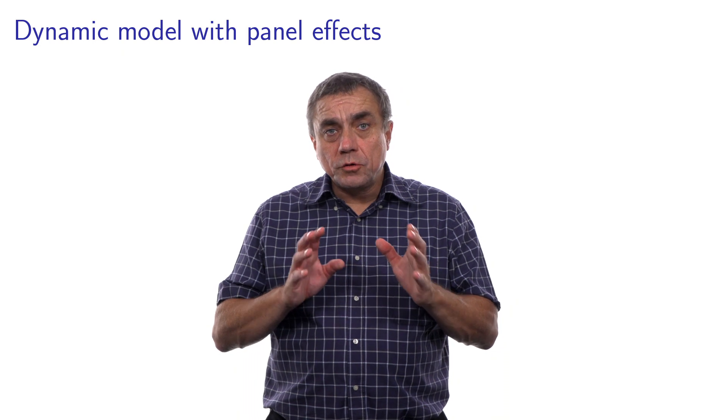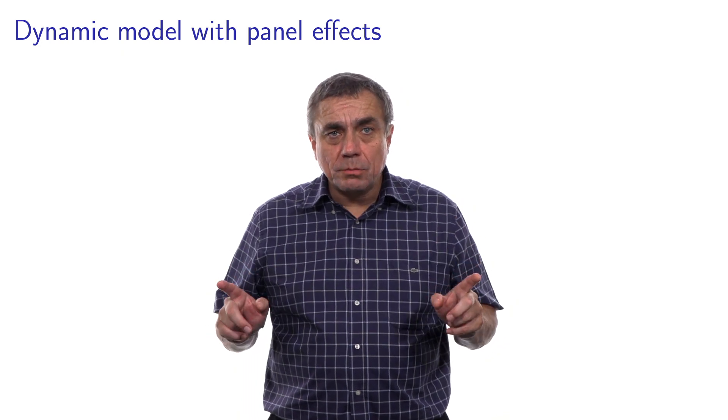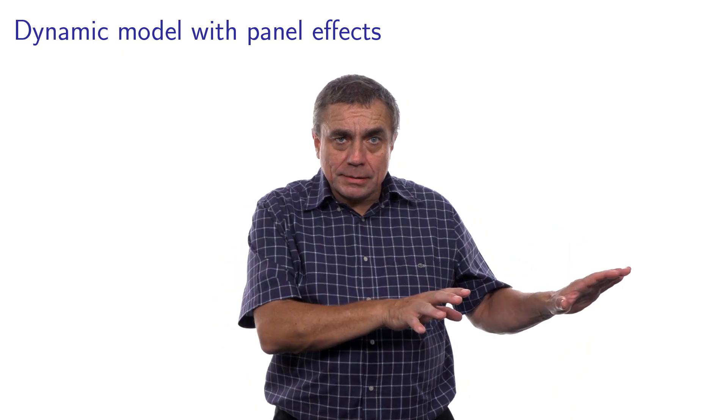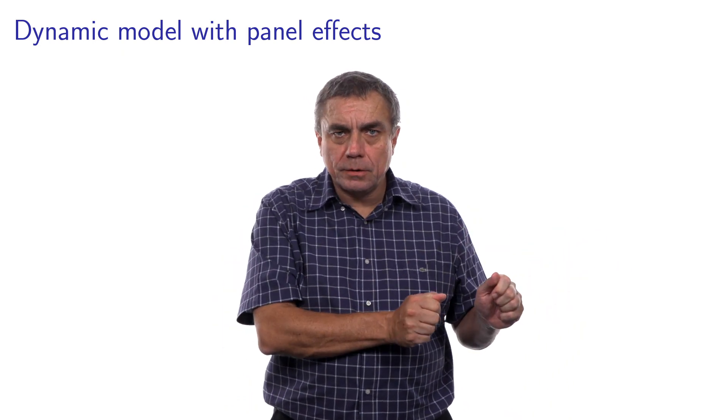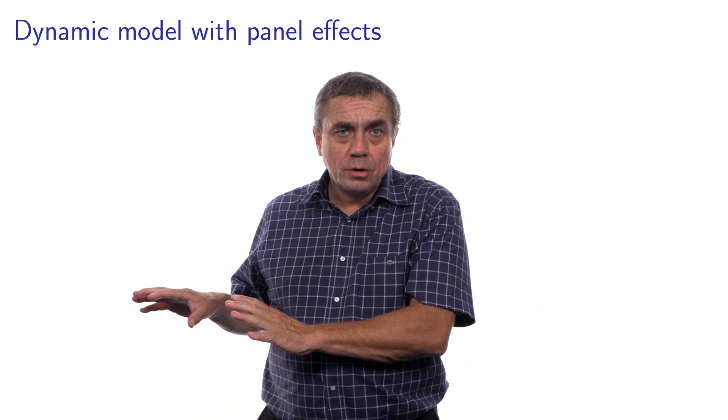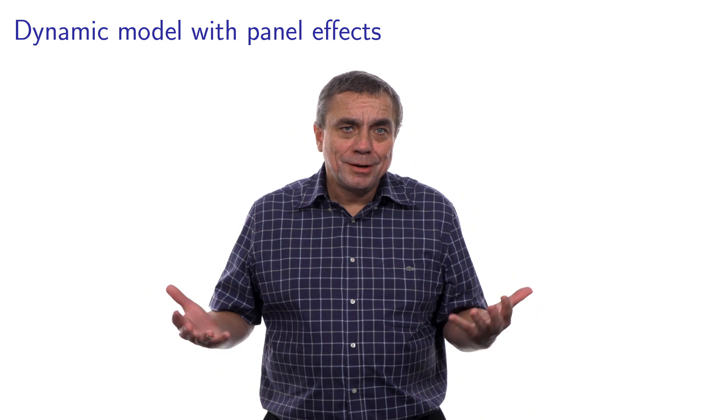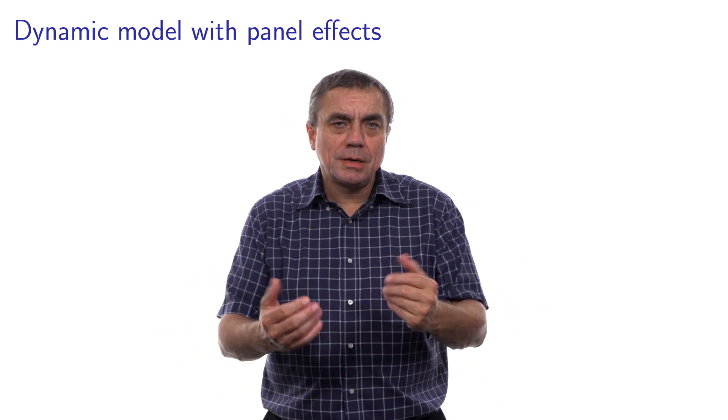In the previous videos, we have addressed the two limitations of the static models separately. The model with panel effects was dealing with serial correlation. The dynamic model was dealing with the influence of past choices. And in this video, we combined the two aspects in the same model.